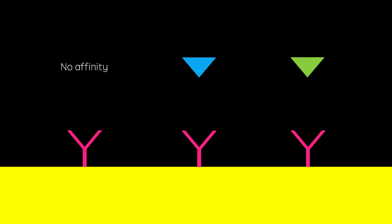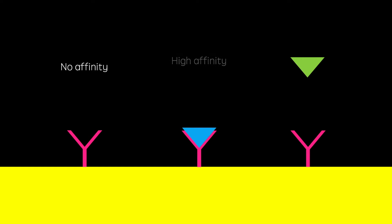In this example, the red drug has no affinity. The blue drug has affinity but no efficacy. These kinds of drugs are known as antagonists and can be used therapeutically to block receptors from becoming activated.